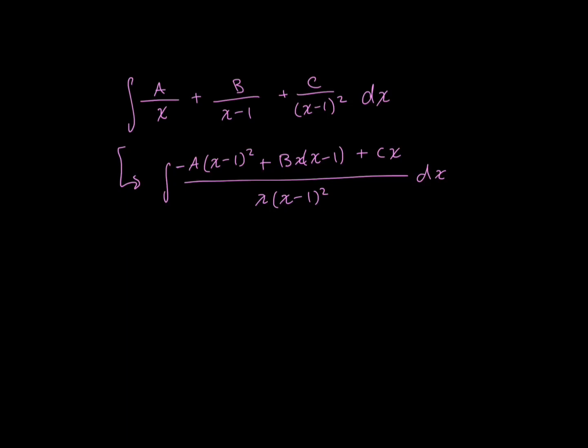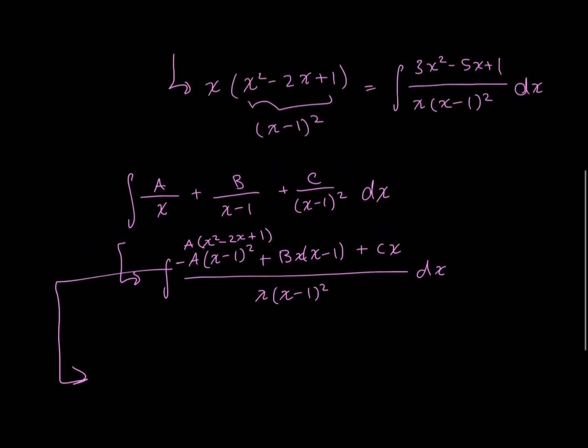I'm going to take this a step further, and I'm going to be distributing everything in. So I just want this as expanded as possible. I find that that works best for me. So this A is going to be multiplied by x squared minus 2x plus 1, as we mentioned earlier up here.